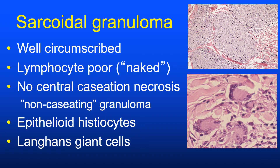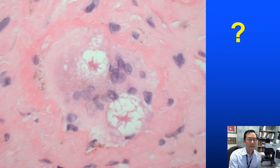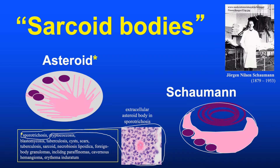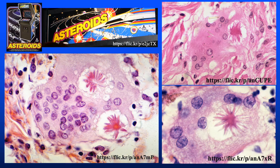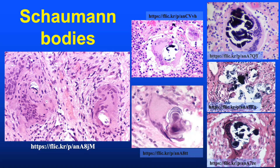Sarcoidal granulomas are typically composed of enlarged, activated epithelioid histiocytes and often contain Langhans giant cells — though those are not diagnostically specific. What is a bit more specific is the asteroid body, one of two so-called sarcoid bodies characteristically associated with sarcoid, though not completely specific. As a teenager in the 1980s, asteroids were fun on a video game; for patients with sarcoid, the asteroid body is a histologic marker. In sarcoid, asteroid bodies are intracellular and thought to represent collagen and/or vimentin intermediate filaments.